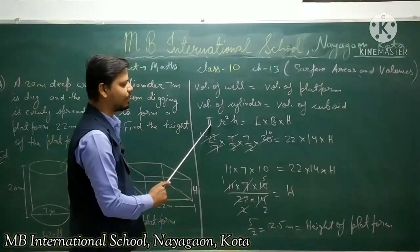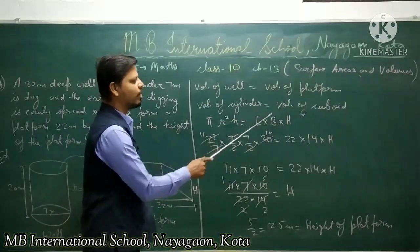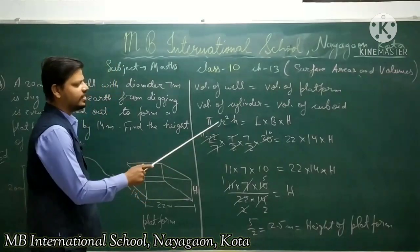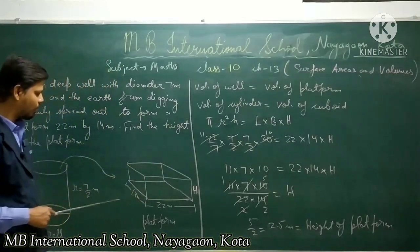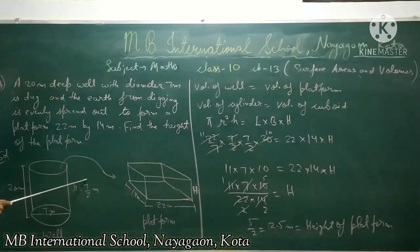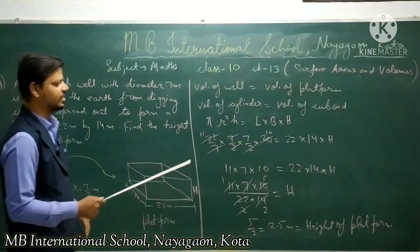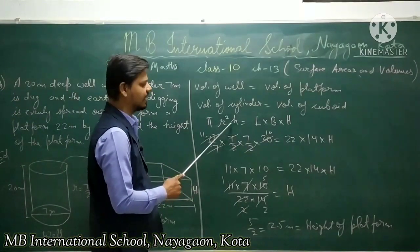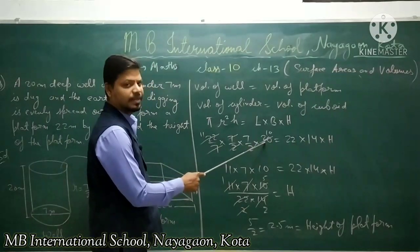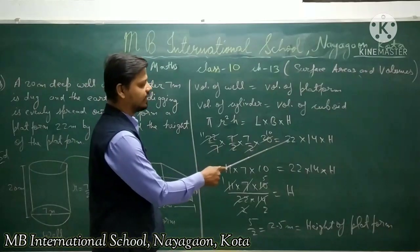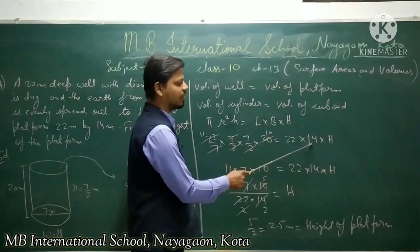Therefore, volume of cylinder equals volume of cuboid. Volume of cylinder is pi r squared h, and volume of cuboid is L times B times H. Substituting: pi is 22/7, radius is 7/2, so r squared is 7/2 times 7/2. Height of the well is 20 meter. Length of the platform is 22, breadth is 14, and height H is to be found.